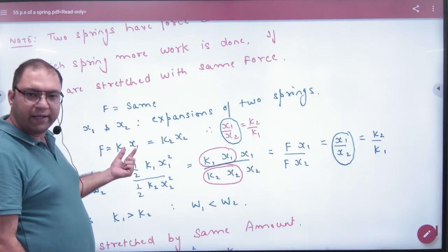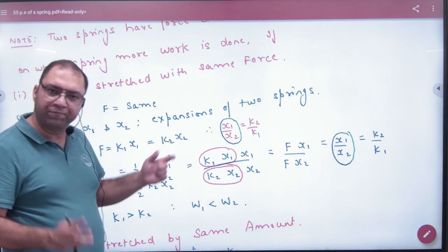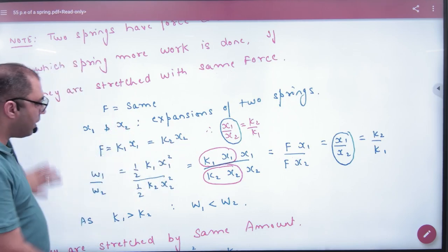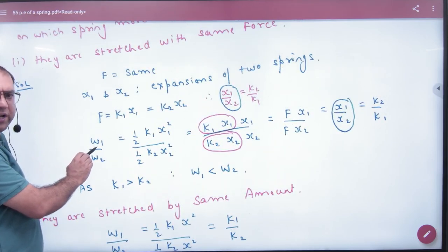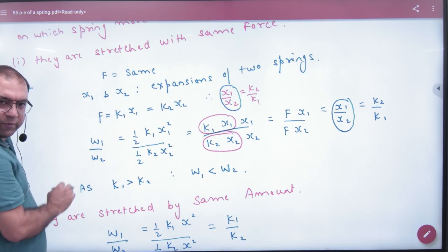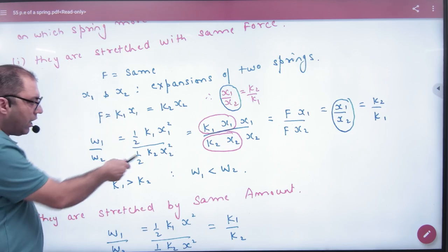So the first rule is clear: K1 X1 is equal to K2 X2. Clear? Work done, what do we have to do? What is work done in stretching a spring? How much work done in the first spring? Half K1 X1 square. How much in the second? Half K2 X2 square.